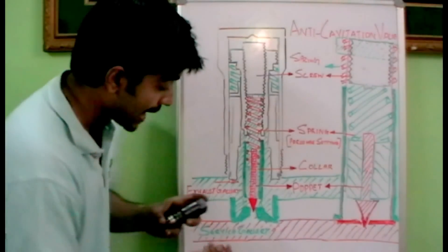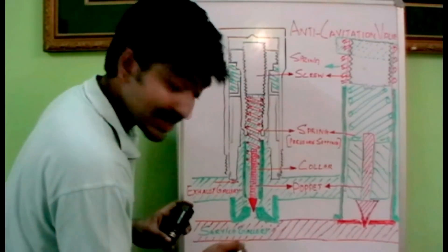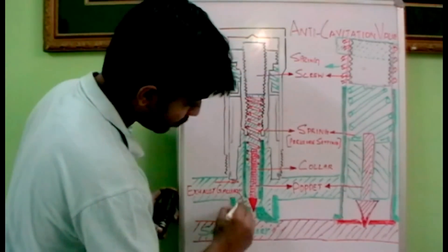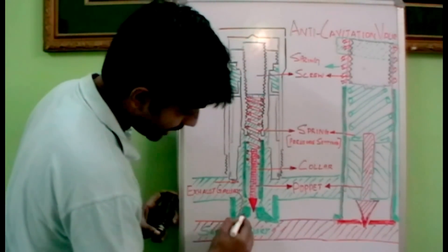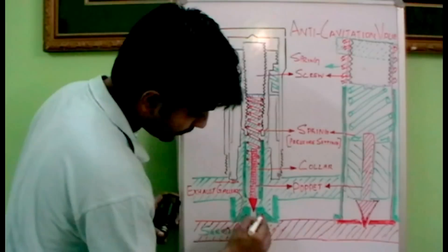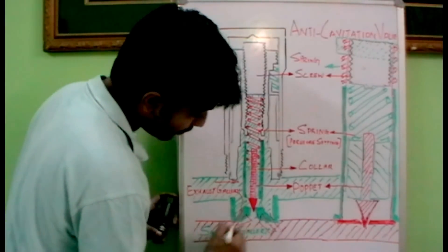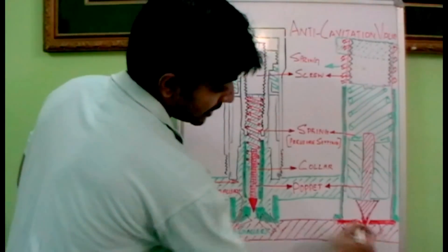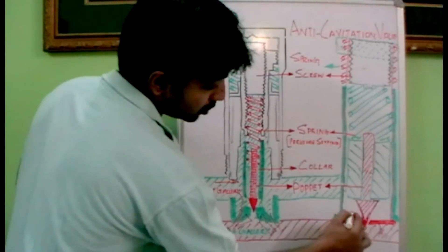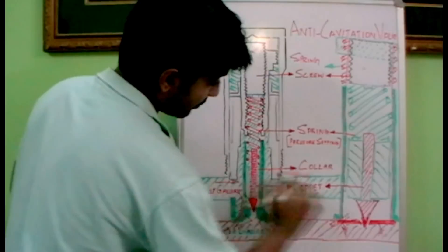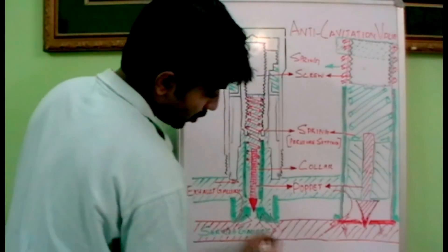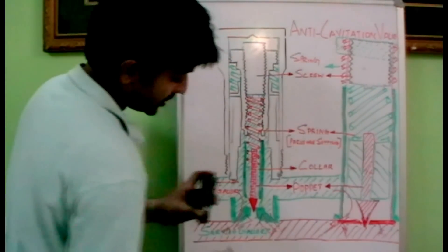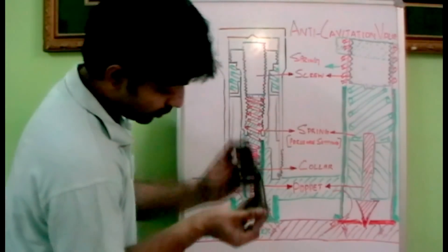For the anti-cavitation function, a negative pressure is created in the service gallery. Oil from the exhaust gallery moves towards the service gallery — this portion comes down, this opens, and we have an opening over here. The same is happening here: this unit comes down, we have an opening, and through this opening the oil from the exhaust gallery comes towards the service gallery, helping the service gallery to avoid cavitation.